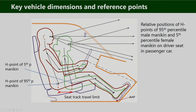When a 95th percentile male mannequin and a 5th percentile female mannequin are positioned on the driver's seat, their H point locations differ. The 5th percentile female's H point is forward and the 95th percentile male's is rearward. When deciding seat track travel limits, we must ensure that both the 5th percentile female and the 95th percentile male can adjust the seat forward and backward as required. This image represents the relative positions of H points for both mannequins on the driver's seat.